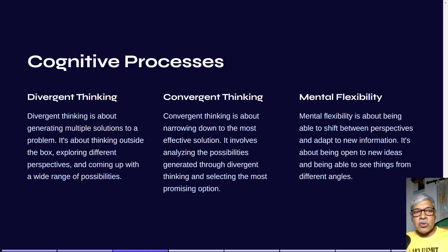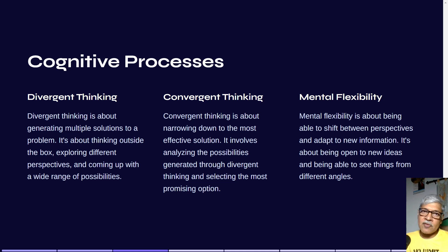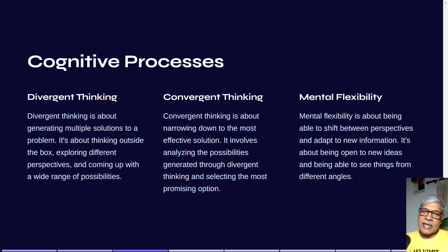In this process, there are three thinking modes: divergent thinking, convergent thinking, and mental flexibility. Divergent thinking is generating multiple solutions to a problem — for example, different ways to help your grandfather up the stairs. Convergent thinking is narrowing down to the most effective solution. Mental flexibility means shifting between perspectives, adapting to new information, and being open to seeing things from different angles.